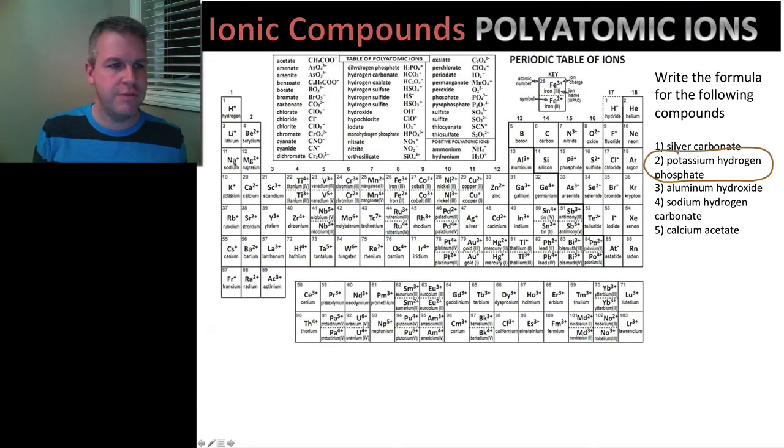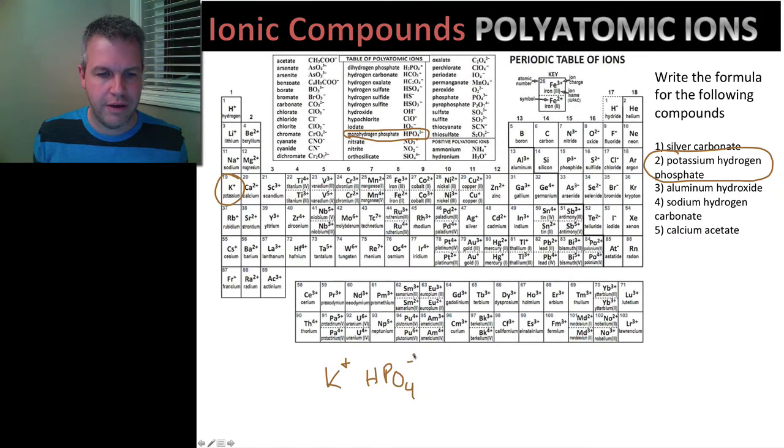Potassium hydrogen phosphate. So we have potassium here. Here they write it as monohydrogen phosphate, but we can just write it as hydrogen phosphate. On your chart it'll be hydrogen phosphate. So we write down K positive 1. Hydrogen phosphate is HPO4 and it has negative 2. So again, just like in our last example, it'll be K2HPO4.